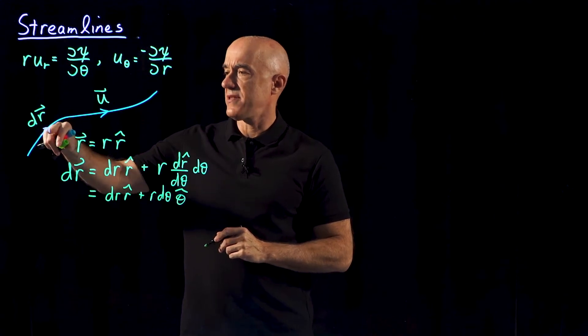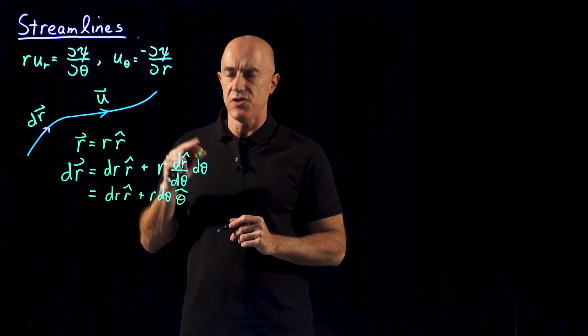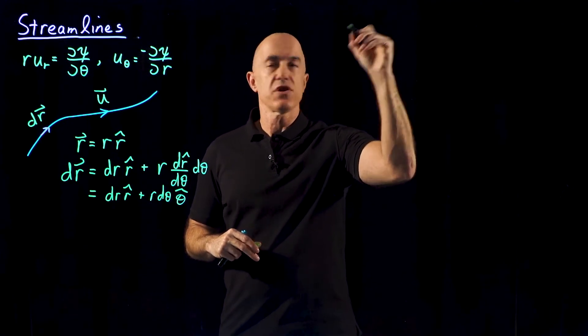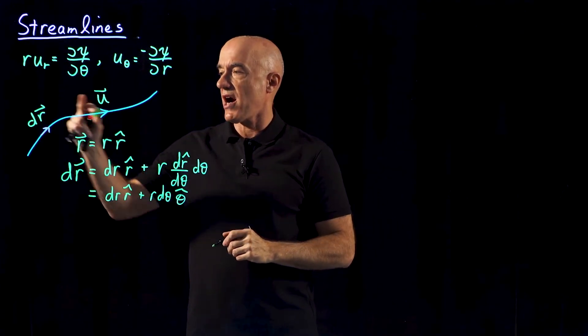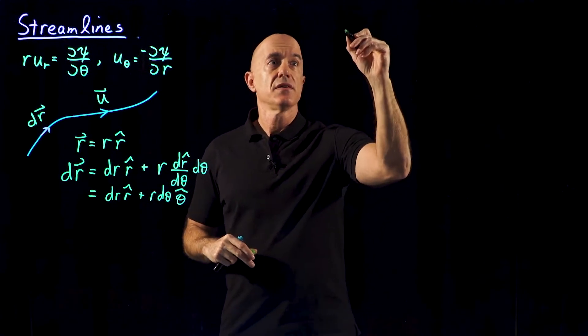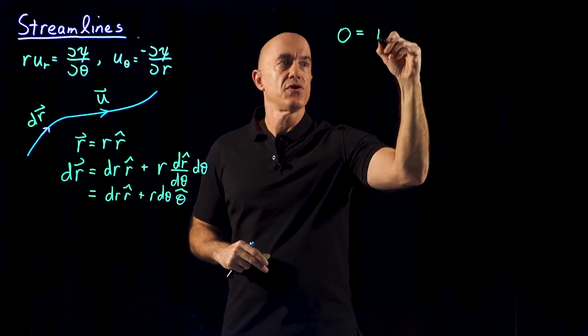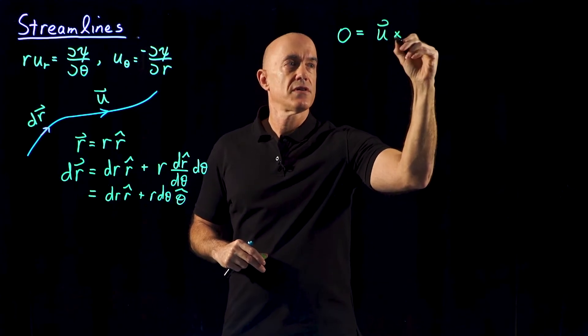Dr now is in the same direction as u. So we can make use of the cross product. We know then that the cross product of u and dr will be 0. So we have 0 is equal to u cross dr.